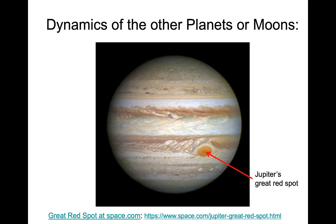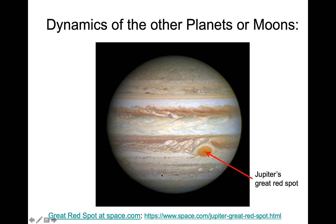Thinking even more broadly, the same physics would be at work on other planets and moons, such as the moons of Jupiter and Saturn, where you can again see fluid dynamical features. Jupiter's Great Red Spot is generally interpreted as a persistent long-term storm that has been on Jupiter as long as we've observed it. Something like that can occur on Jupiter because it lacks a land surface with mountains and trees that create friction, which would cause such a storm to dissipate on Earth.